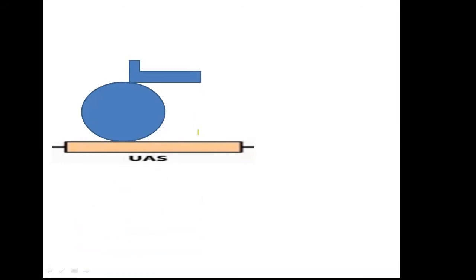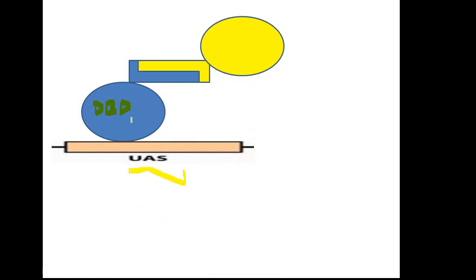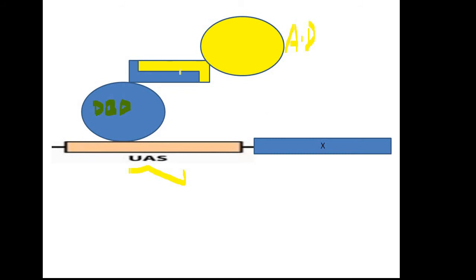The DNA binding domain (DBD) binds to the upstream activator sequence of the gene. The transcription machinery is only recruited when the activation domain (AD) comes close to this DBD. The other protein, which interacts with the bait, remains bound to the activation domain. When these two proteins interact, the DBD and AD are brought into close proximity, the transcription machinery is recruited, RNA polymerase binds, and transcription is switched ON.